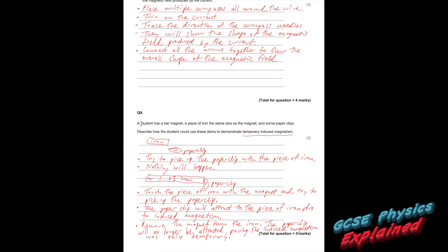And finally number nine. A student has a bar magnet. A piece of iron the same size as the magnet. And some paper clips. Describe how the student could use these items to demonstrate temporary induced magnetism. If you induce something it means you've made it happen. And temporary means it's not going to happen forever. What you want to do is get your little iron bar. Put it next to the paper clip. Try to pick the paper clip up with a piece of iron. And nothing will happen.